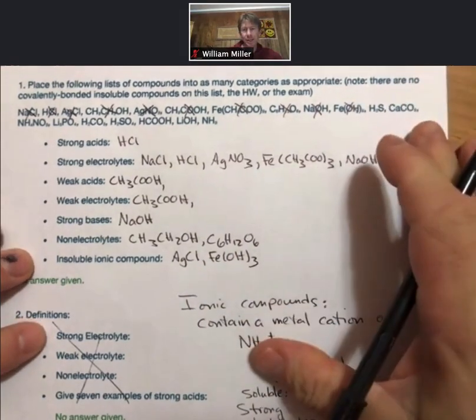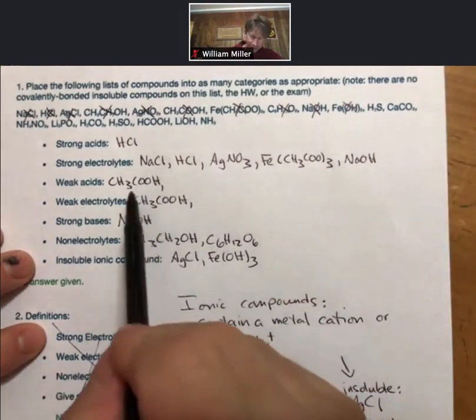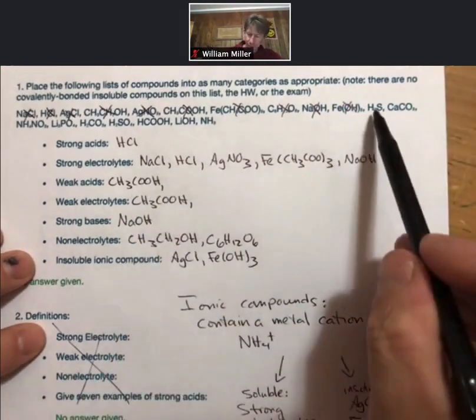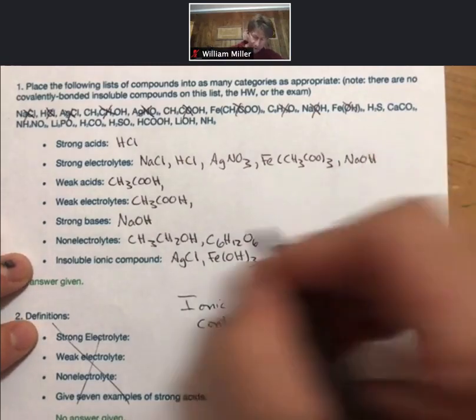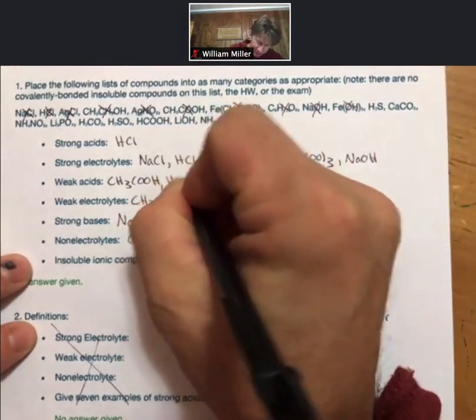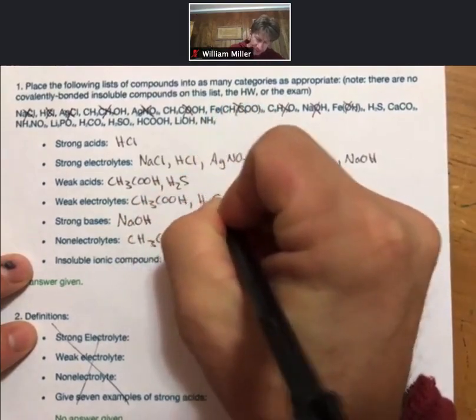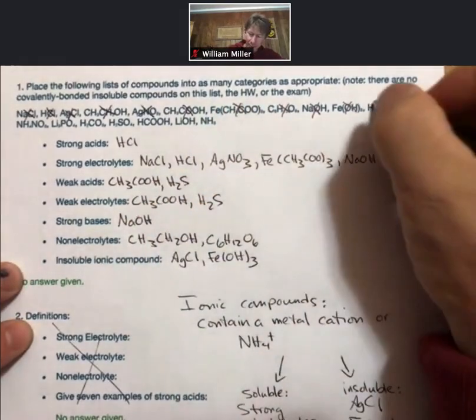H2S. Well, there's only two ways to have acids: the COOH group in the back or Hs in the front. H2S is an acid. It is not one of our seven strong acids. So it is a weak acid and a weak electrolyte.